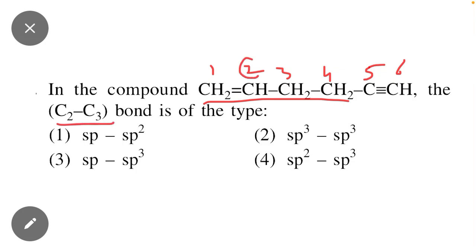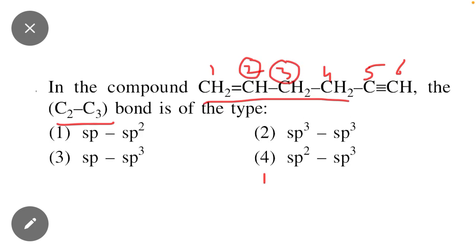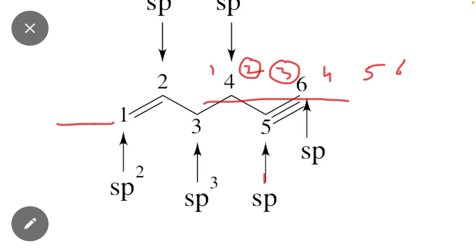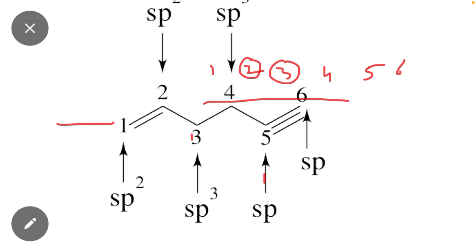Carbon number two and carbon number three each contain a specific hybridization type. First of all, let's draw the structure. Here you can see the structure of this molecule, and the numbering will start from this carbon.